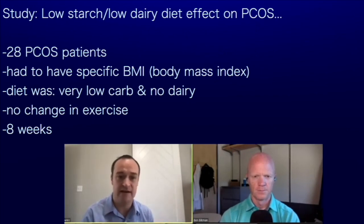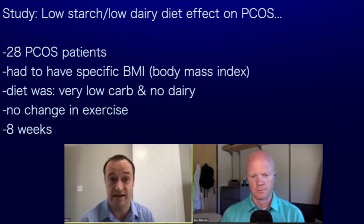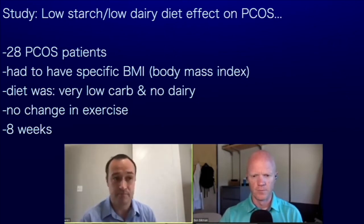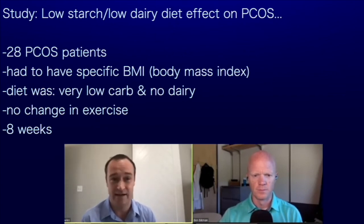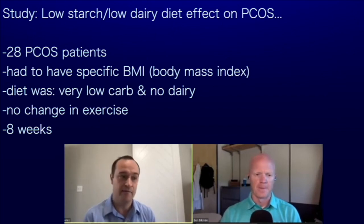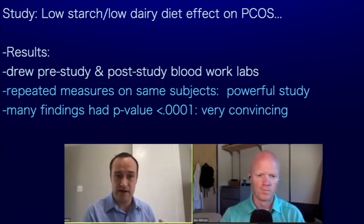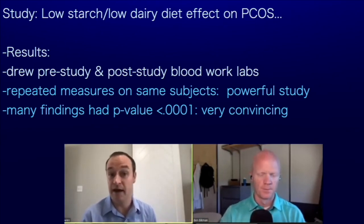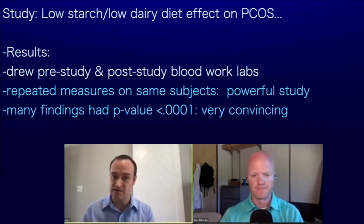They got 28 patients diagnosed with PCOS with specific BMI criteria and put them on a very low-carb, no-dairy diet. They brought patients in for a two-hour session with a nutritionist, went through diet recommendations, and asked them not to change their exercise routine to try to isolate diet as the variable. They did the diet for eight weeks, drew labs, and recorded clinical measurements before and after intervention to compare through statistical analysis.